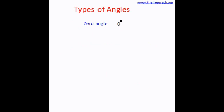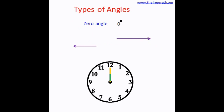The next type is zero angle. A zero angle is an angle that measures 0 degrees, meaning both the arms would be on each other. The angle would look like this or like this. A good example is 12 o'clock on a clock, where both hands are on each other and they make a zero angle.